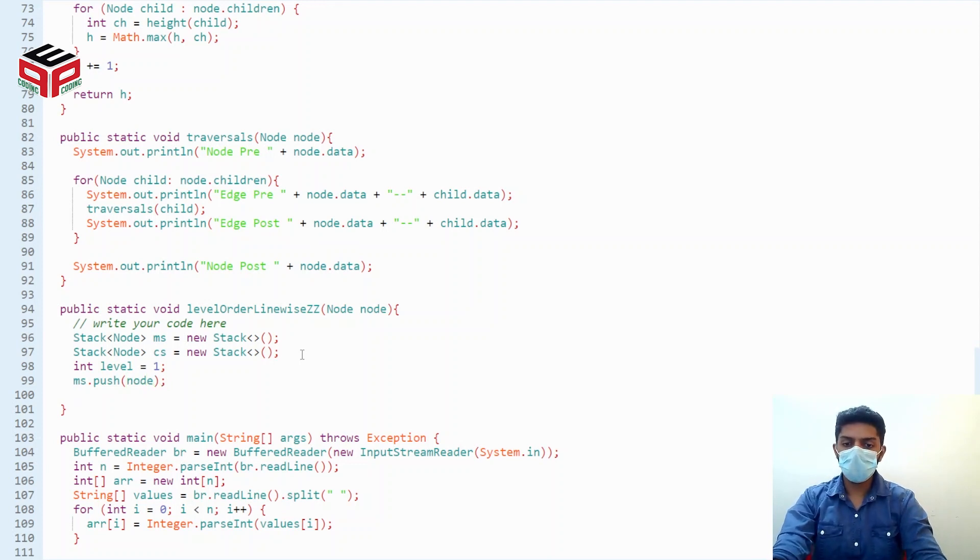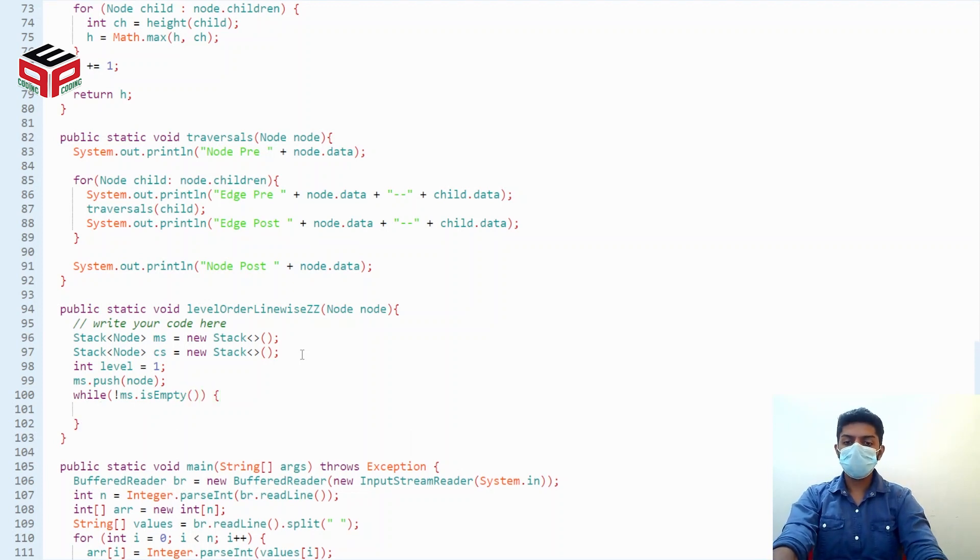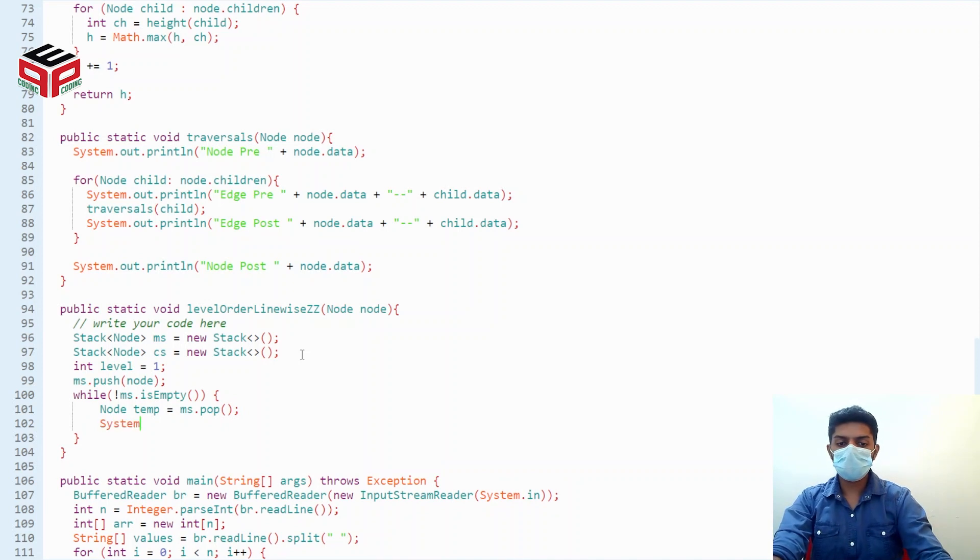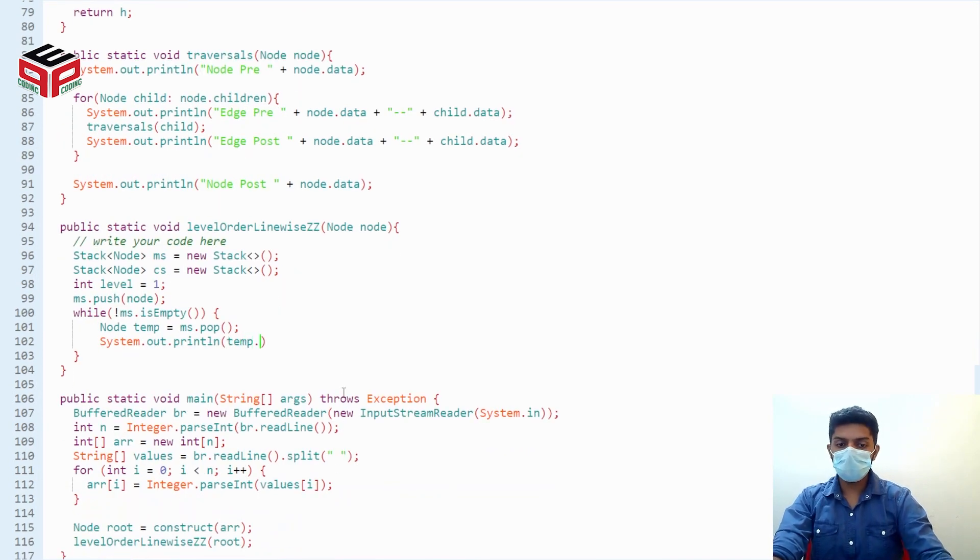After this, while not ms.is_empty, until the main stack becomes empty, what do we do is we remove the node first. Node temp equals to ms.pop. We print the node: system.out.print temp.data.